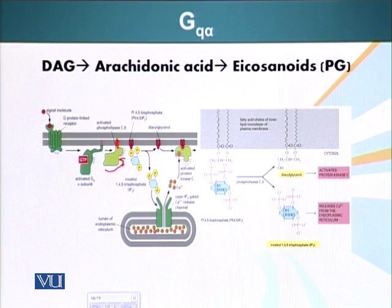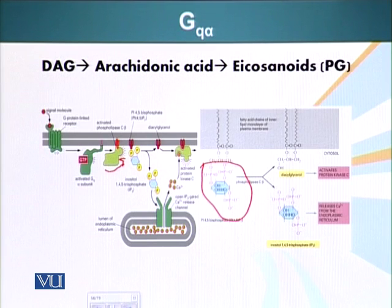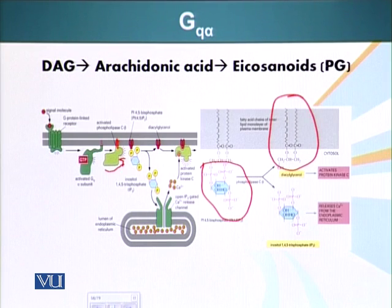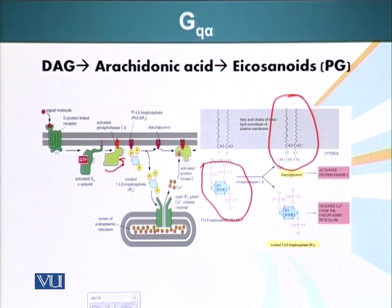Phospholipase C is an enzyme that cleaves a phospholipid molecule. It cleaves phosphatidylinositol bisphosphate into two molecules: inositol triphosphate (IP3) and diacylglycerol (DAG). Diacylglycerol can serve as an anchor to which protein kinase C attaches.